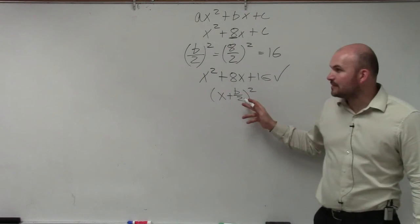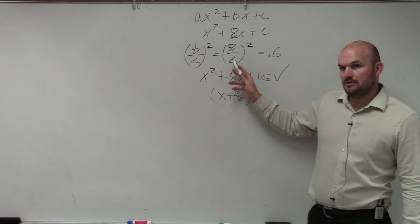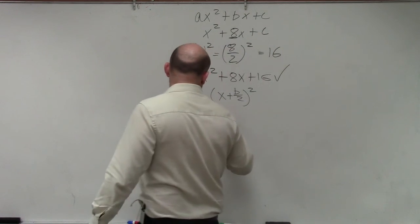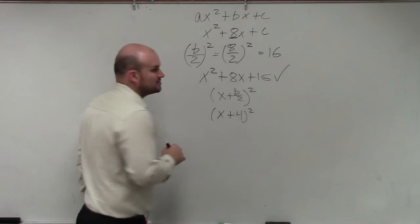Then what was b divided by 2? 4. So your factored form of this is x plus 4 squared.